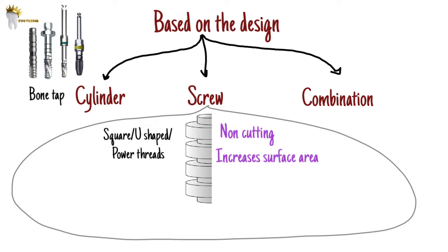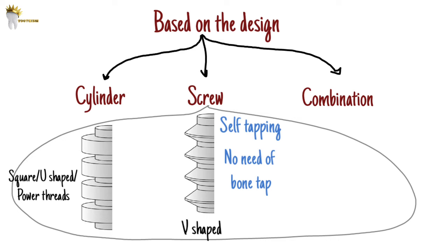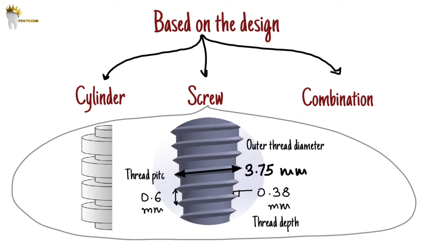There is also a V-shaped thread design with cutting threads. This is called a self-tapping implant because you don't need a thread former to make threads in the bone — the threads are sharp and easily engage in the bone. This V-thread design has the longest history of clinical use. The most common outer thread diameter is 3.75 mm, with a 0.38 mm thread depth and a 0.6 mm thread pitch.